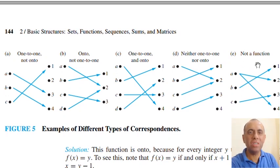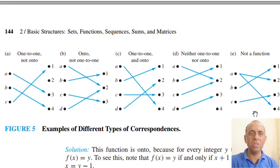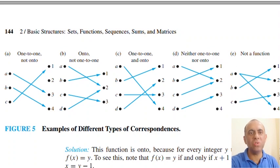The last example is not a function at all, because element A is mapped to two different outputs. A valid function requires that every input maps to exactly one output. Multiple inputs can map to one output, but a single input mapping to two outputs makes it an invalid function.